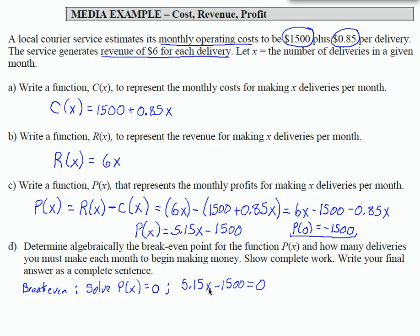So the way we do that is we set our profit function that we just found equal to 0. And then we solve for X because that's going to tell us how many deliveries we need to make in order to break even. So I'm going to add 1,500 to both sides, giving me 5.15X equals 1,500. And if I divide and I round to the nearest hundredths, I get 291.26.